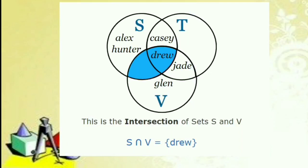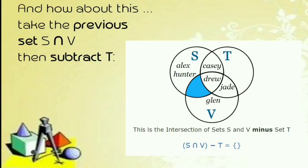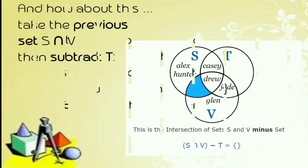This is the intersection of set S and V — ibig sabihin, parehas naglalaro ng soccer at ng volleyball. Ngayon ay si Drew. And how about this: take the set S intersects with V, then subtract T. So, wala sa kanila ang naglalaro lamang ng soccer at ng tennis — ibig sabihin, walang laman ang set.